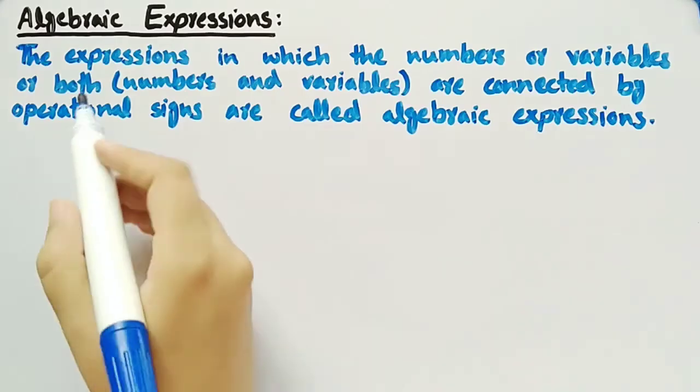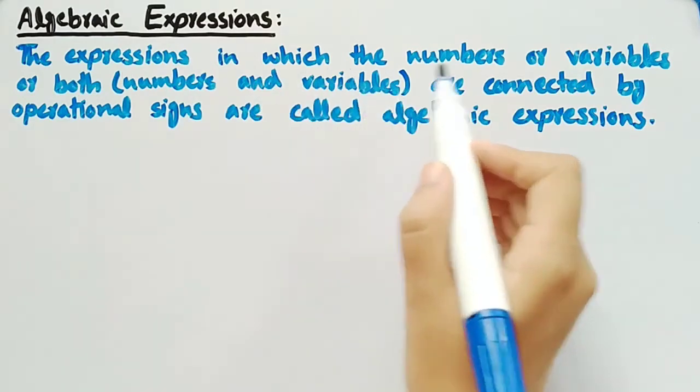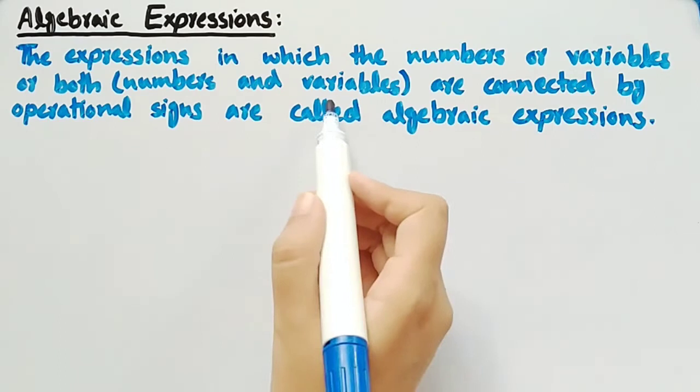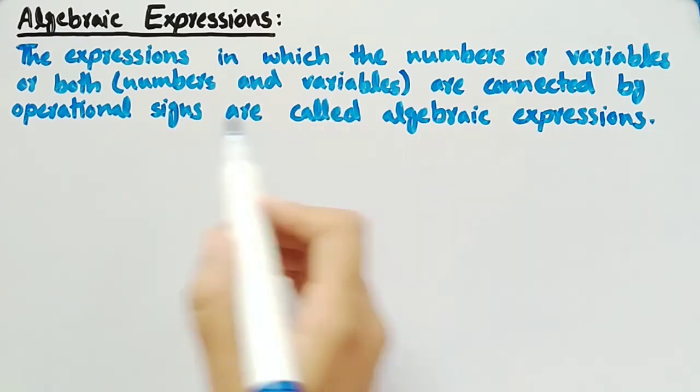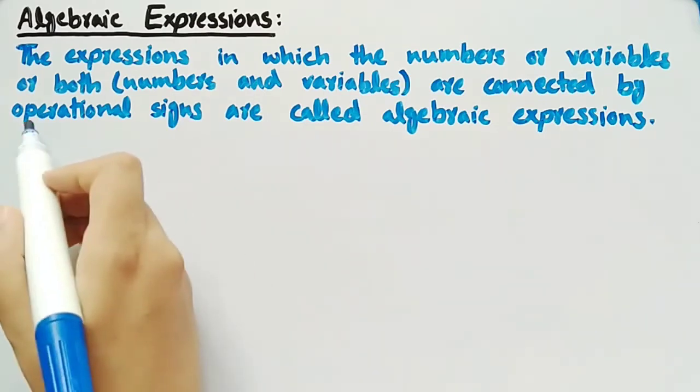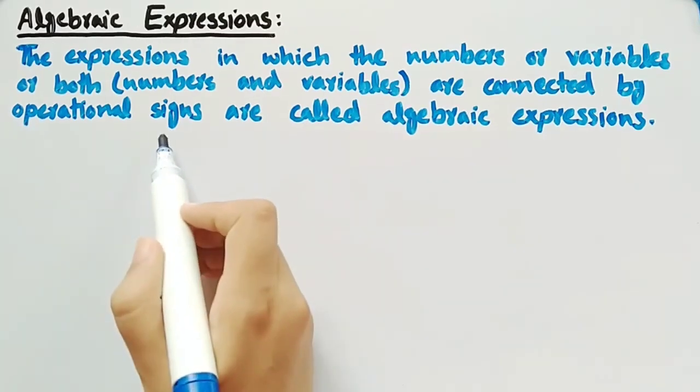Firstly, let's see what are algebraic expressions. The expressions in which numbers or variables, or both numbers and variables, are connected by operational signs are called algebraic expressions, where operational signs are the signs of plus, minus, divide, and multiply.